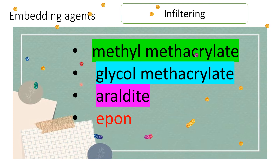Tissue is a very fragile and brittle structure, so it does not have proper shape or strength. Without embedding, how can it be cut with a microtome? The embedding process gives strength to the outer surface of the tissue.